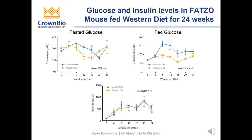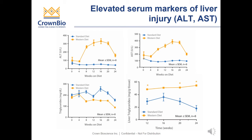Here are the fed and fasted glucose and insulin levels in the FATSO mouse fed a Western diet for 24 weeks of age. Fasted glucose levels in the left-hand panel show no significant differences in the Western compared to the standard diet. However, in the fed glucose state, the animals placed on the Western diet do not show significantly higher hyperglycemia than the animals kept on the standard diet. Insulin levels were not significantly different between Western diet and standard diet in the FATSO mouse. We did see as early as 4 weeks of age an increase in ALT and AST levels in the FATSO mice on the Western diet. These levels were maintained throughout 20 weeks, and by 24 weeks of age we saw a decline in these levels, perhaps suggesting further liver injury.